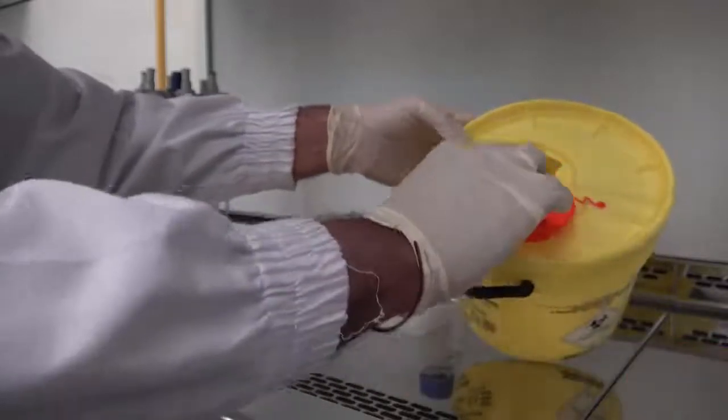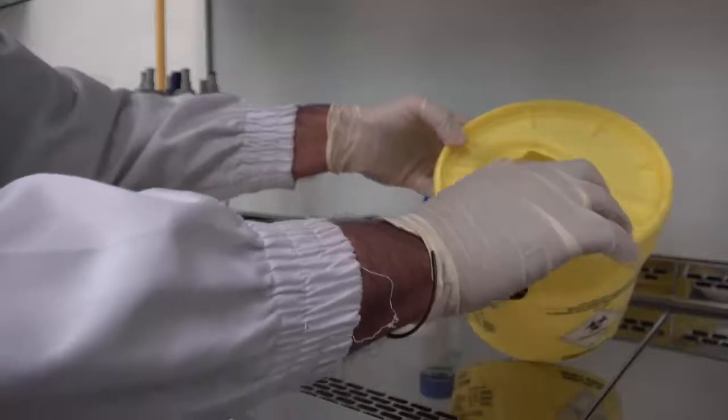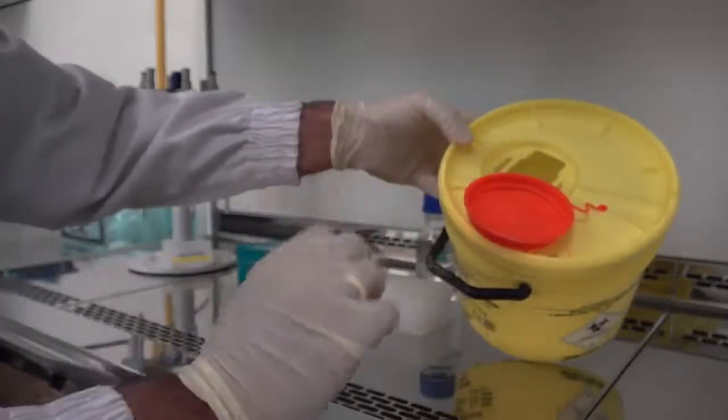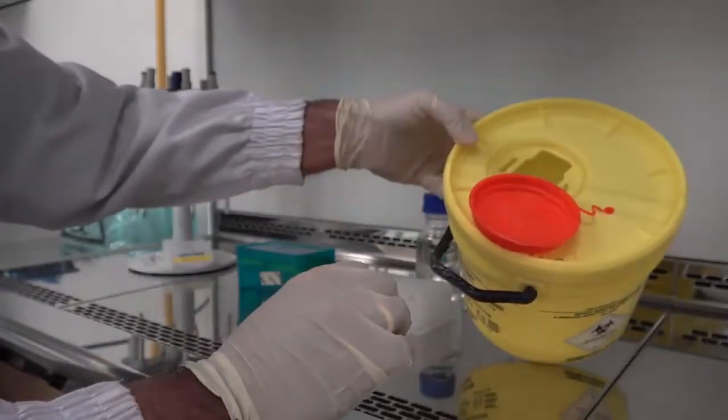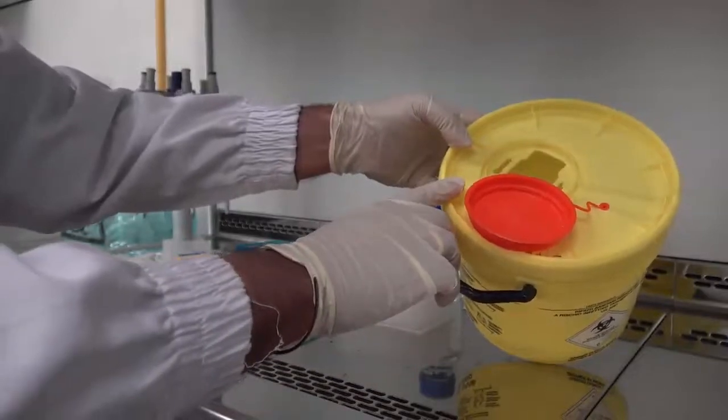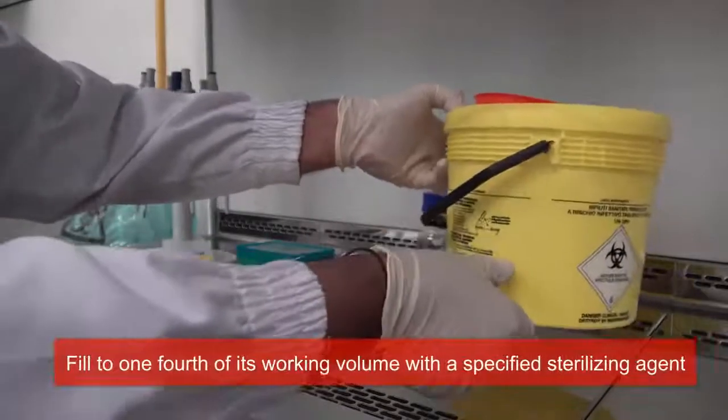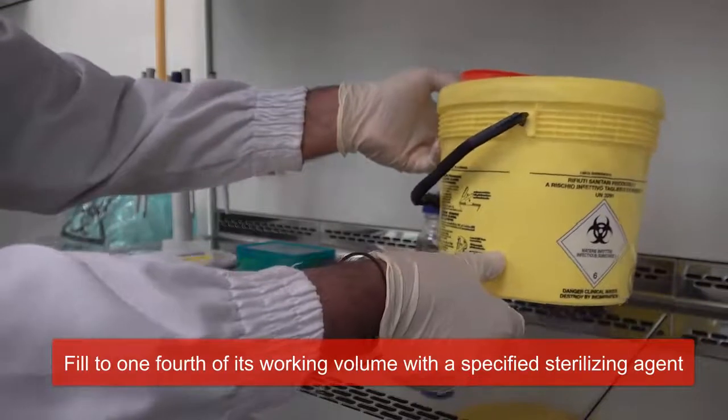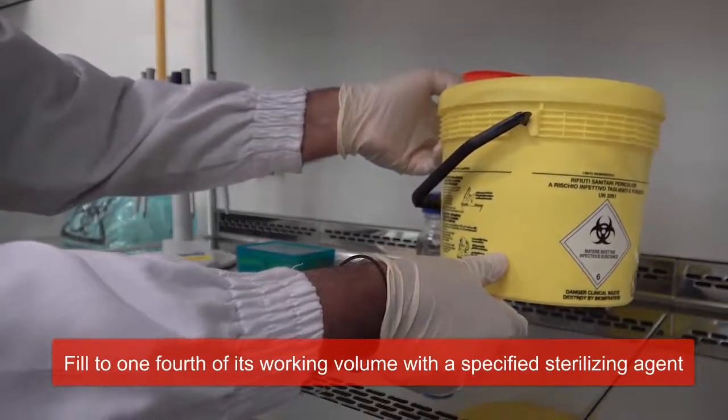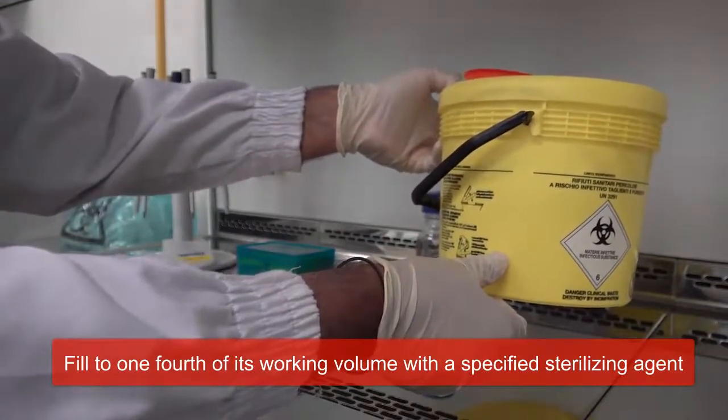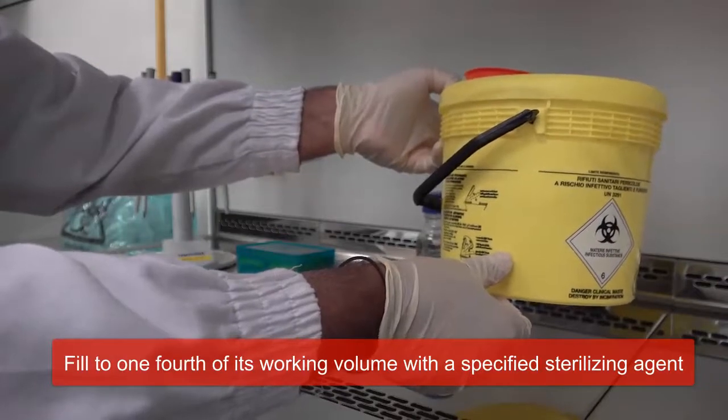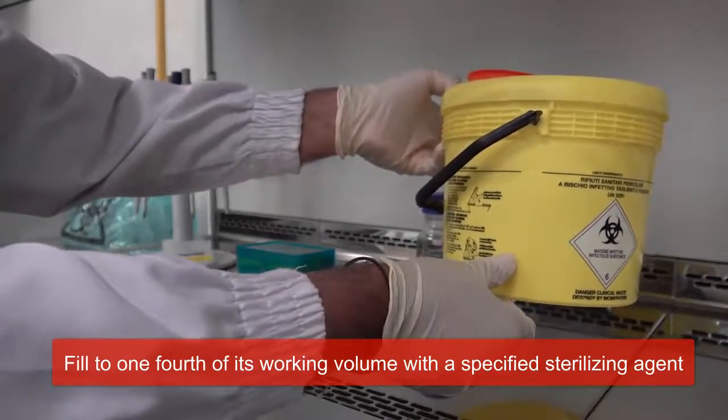This waste container is specially designed for sharps and other disposable waste. For the purpose of our biological safety cabinet, pipette tips are considered as sharps and are disposed in this container. The container is filled to one-fourth of its level with a designated sterilant. In this case I am using 70% ethanol.